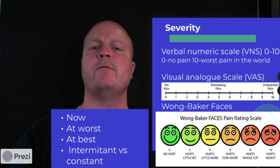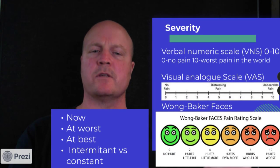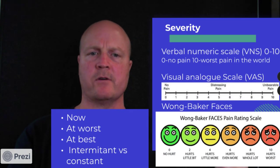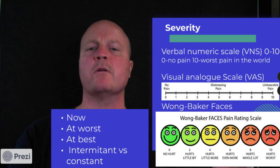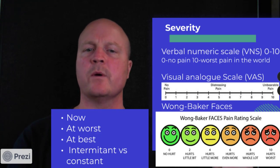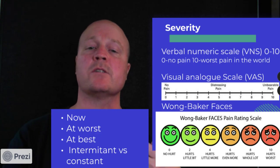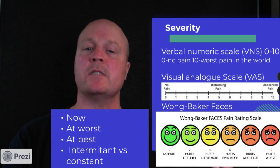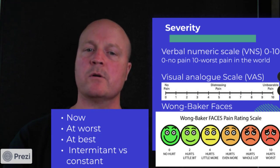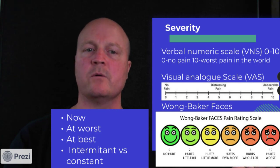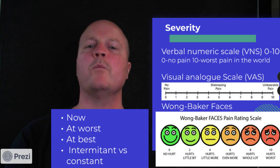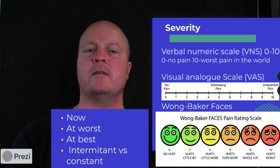S is for severity. There are three different ways we can measure severity. We've got a verbal numeric scale where we go on a scale of 0 to 10 — 0 is no pain, 10 is the worst pain in the world — and ask what would you rate your pain.